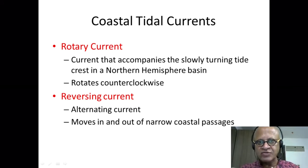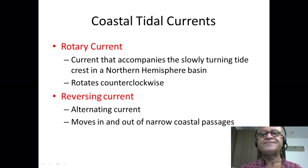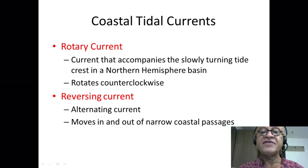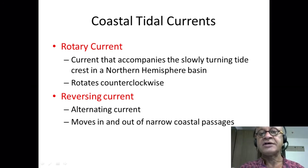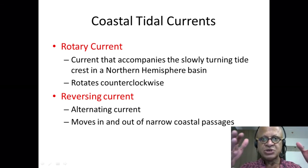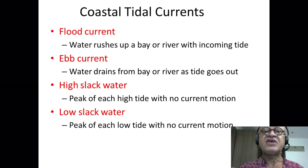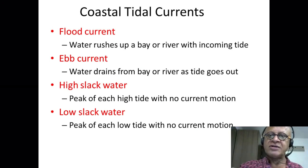Tidal currents are created at the coast as the tides come in, and they cannot just flow out, so they create some patterns where transport of water is involved. They can create rotary currents where the current slowly turns — in the northern hemisphere this rotates counterclockwise, as we'd expect for cyclonic circulation. You can also get alternating reversing currents moving in and out in narrow coastal passages. We already talked about flood current when the water rushes in, and the ebb current when the water drains back out of the bay, estuary, or river.